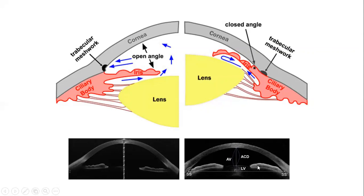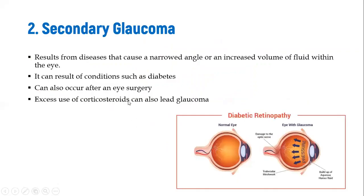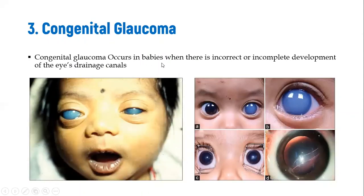This image shows narrowed angle compared to open angle glaucoma. Secondary glaucoma results from other conditions or diseases that lead to increased fluid volume within the eye, such as diabetes, prior surgery, or excessive use of corticosteroids. Congenital glaucoma occurs in babies when there is incorrect or incomplete development of the eye's drainage canal, causing pressure to build up early in life.